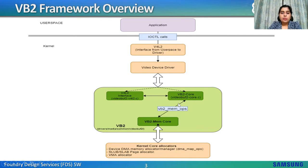The VB2 core uses VB2 memops when talking to VB2 mem-core, which is responsible for memory allocation. It uses kernel core allocators like DMA memory allocator, SLUB/SLAB page allocator, and VMA allocator. The VB2 memops is chosen by the driver during VB2 queue init at an early stage — usually during device open — where all context queues for a particular run are set.